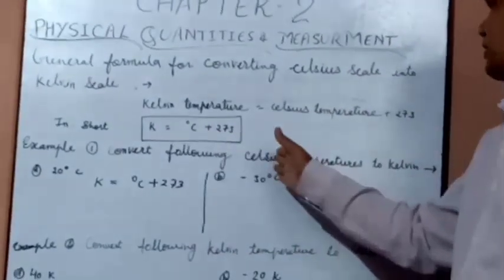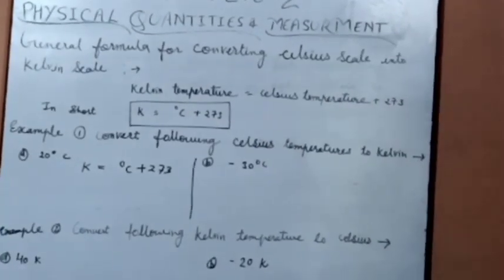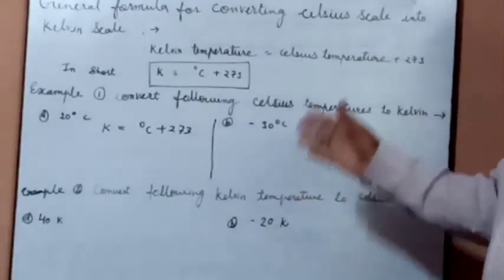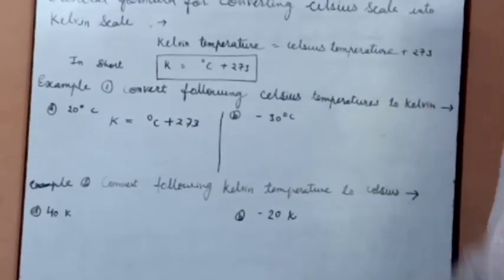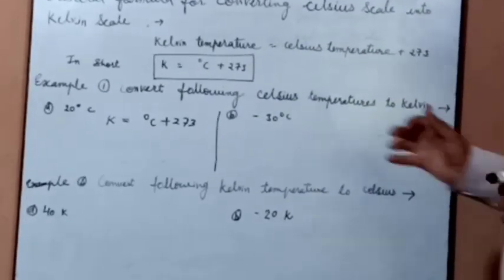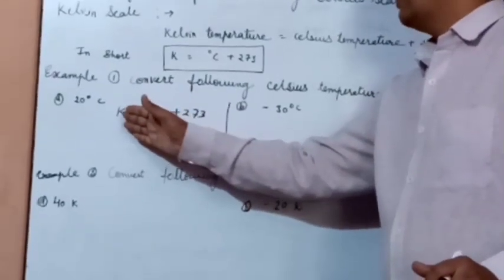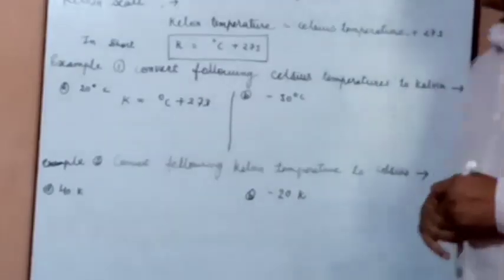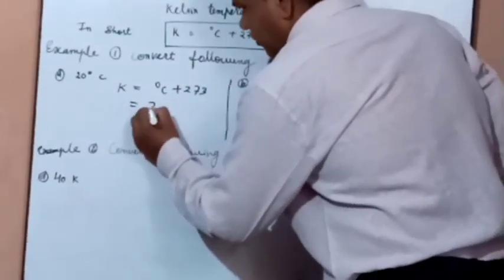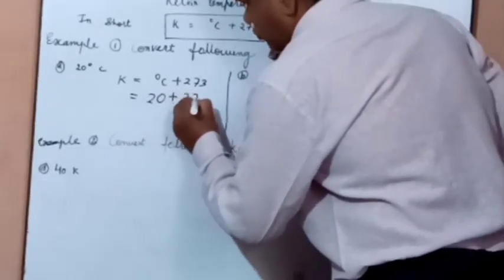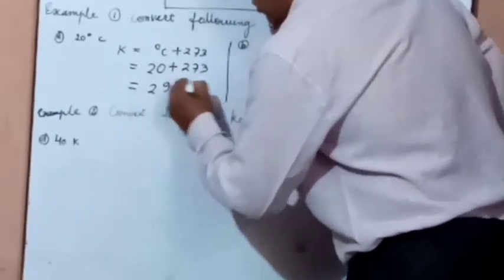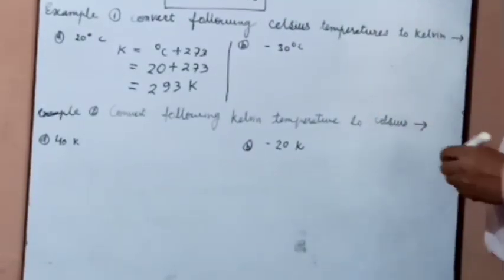Now let's do some examples. Convert the following Celsius temperatures to Kelvin. First temperature is 20 degree Celsius. To convert Celsius temperature to Kelvin, we add 273 to the given temperature. The formula is: Kelvin = degree Celsius plus 273. Given temperature is 20 degree Celsius, so we put 20 plus 273. The answer is 293 Kelvin.